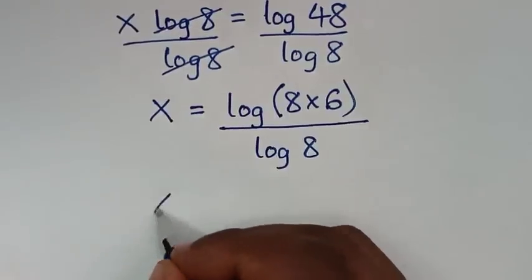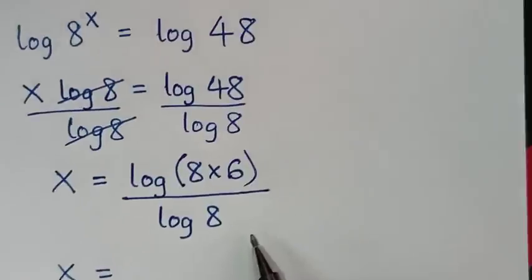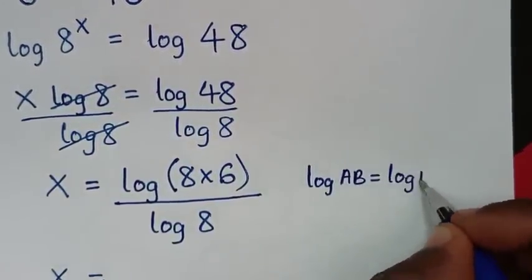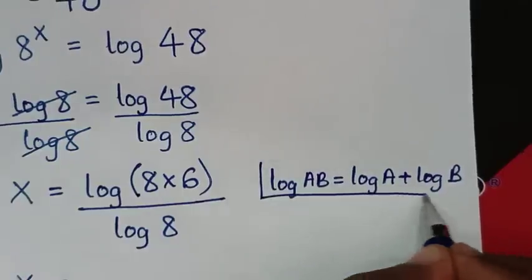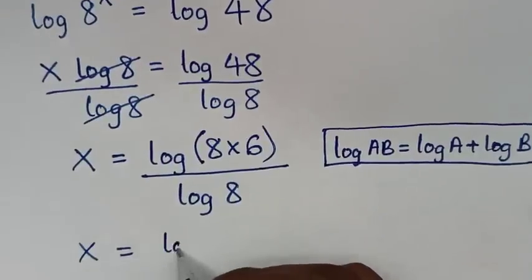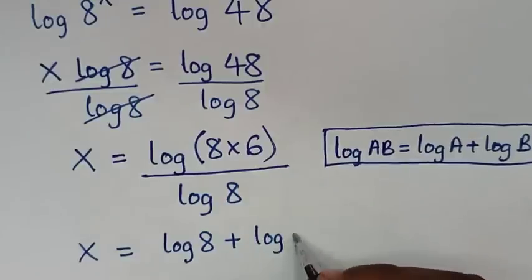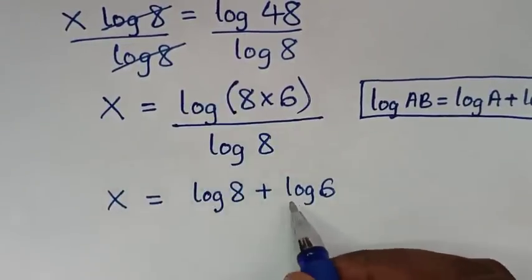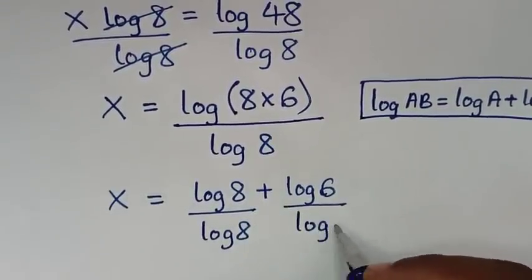Then in the next step, x is equal to log of 8 times 6 over log of 8. This is in the form of log(a×b) which equals log a plus log b. So it becomes log of 8 plus log of 6, then divided by log of 8 — we divide each part by log of 8.